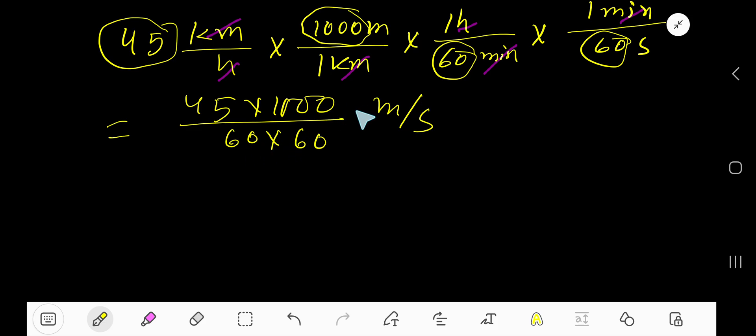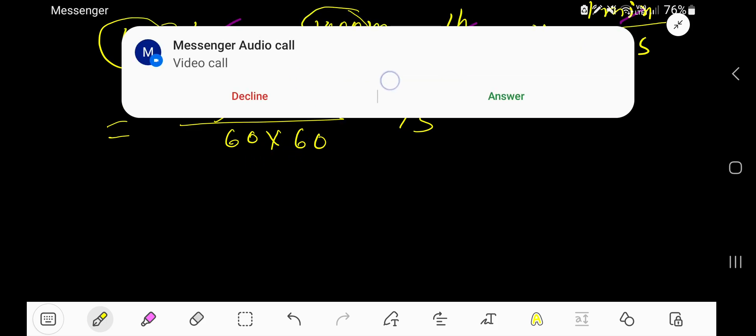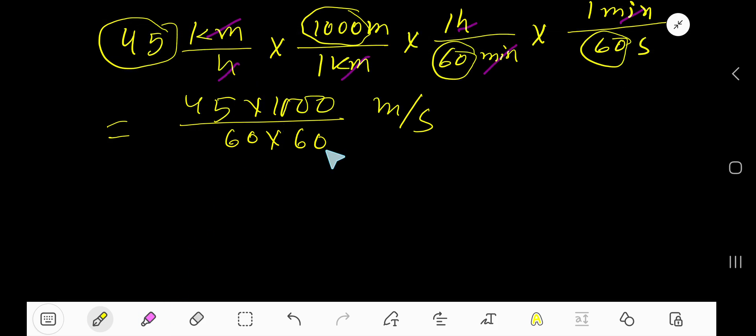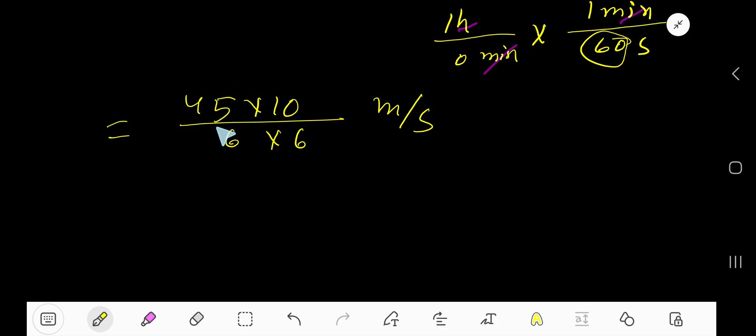Now cancel this zero with this zero, then this zero with this zero. So we're getting 10 here. Now divide this 45 by 3, we will get 15. Divide this 6 by 3, we will get 2. Divide this 15 by 3, we will get 5. Divide this 6 by 3, we will get 2. Divide this 10 by 2, we will get 5. Divide this 2 by 2, we will get 1.